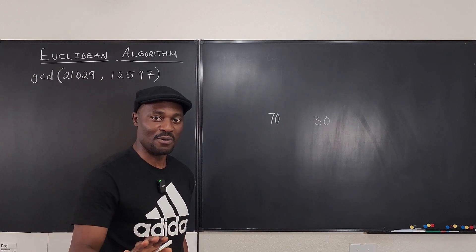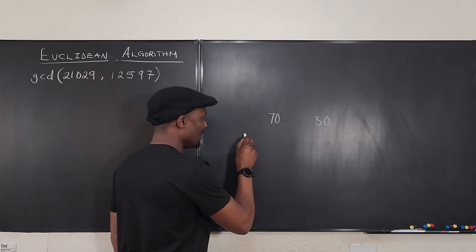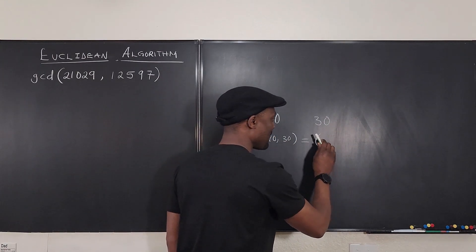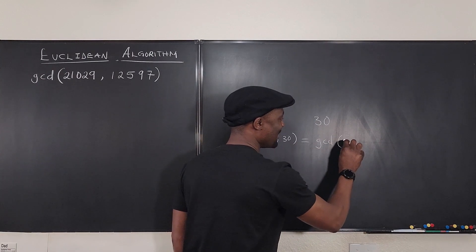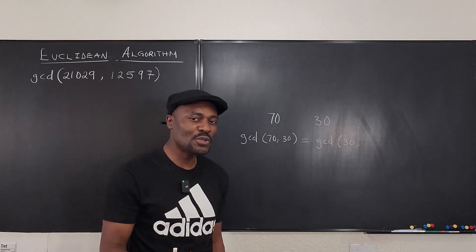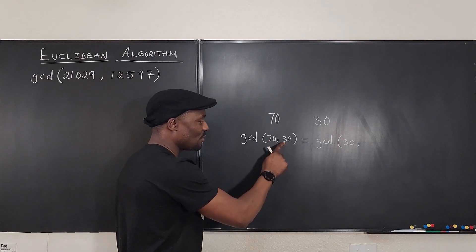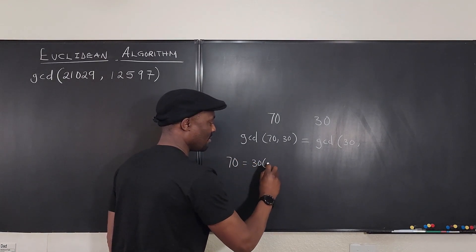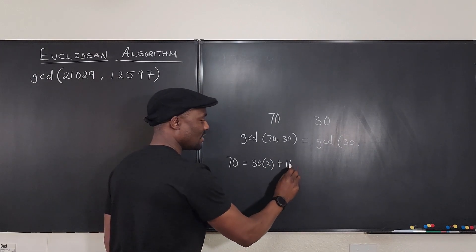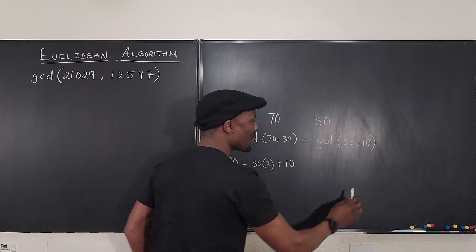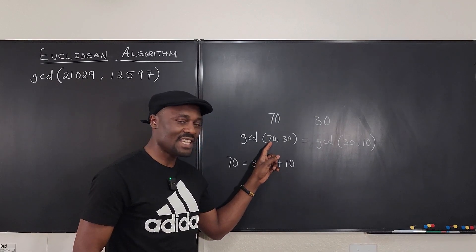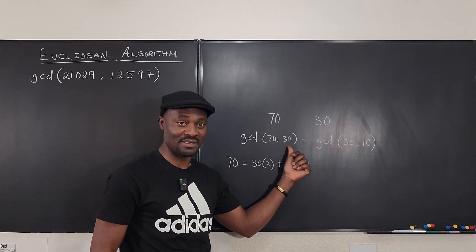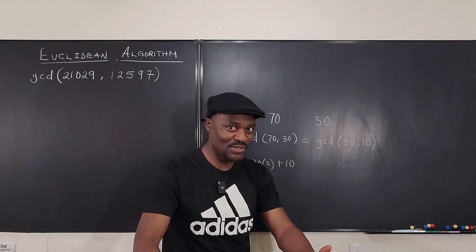I don't think there's another number that could divide both of them, but assuming you didn't know, all you have to do is say: the GCD of 70 and 30 is the same thing as the GCD of 30 and a smaller number. To get that smaller number, ask how many times 30 divides into 70. You can write 70 as 30 multiplied by 2, with a remainder of 10.